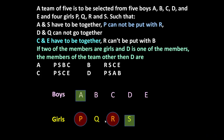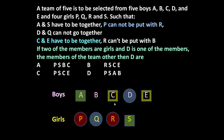A and S have to be together. P cannot be put with R — P and R cannot be together, so I am representing it by a circle. Circle means they cannot be together. D and Q cannot go together — again in a circle, they cannot go together.